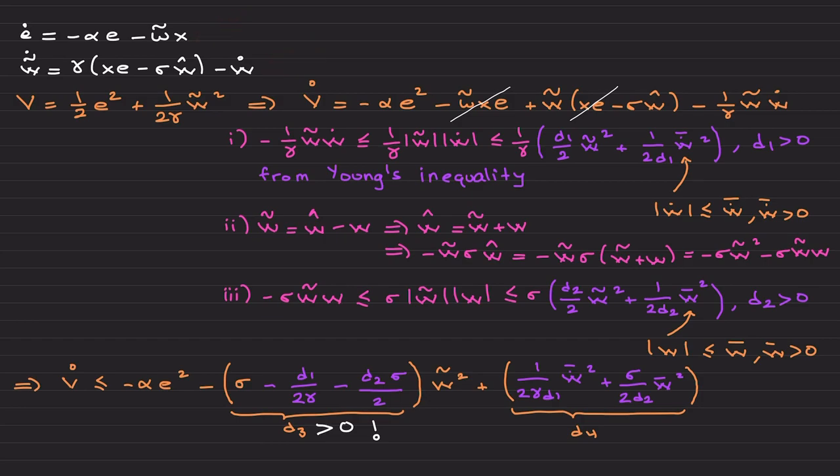After we insert e dot and w tilde dot, I would like to mention about three steps. The first step is about this term—I am going to use Young's inequality similar to the previous video on projection operator. This is upper bounded by this: I am taking absolute value and applying Young's inequality to this term for some positive constant d1.